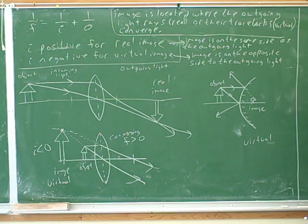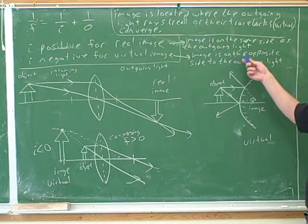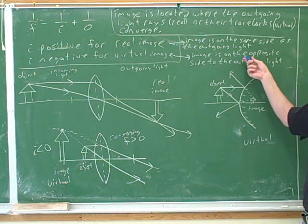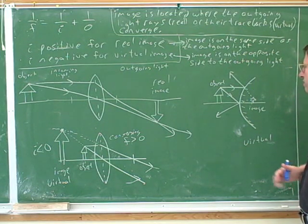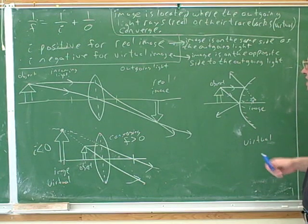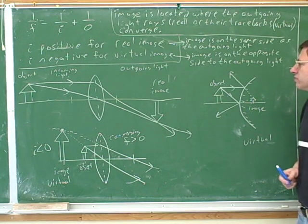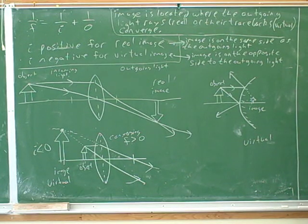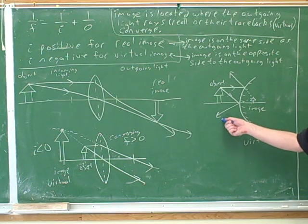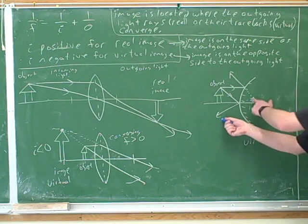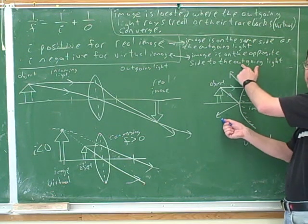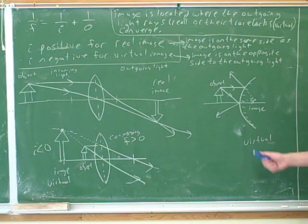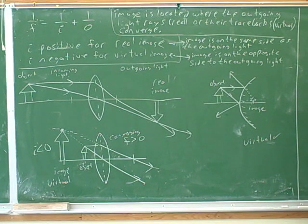While we're on the same topic, let's use our other definition. A virtual image is supposed to be on the opposite side to the outgoing light. Which side is the outgoing light on — left or right? The left. And which side is the image on? The right. So they are on opposite sides, and that confirms it's a virtual image. That definitely is virtual.